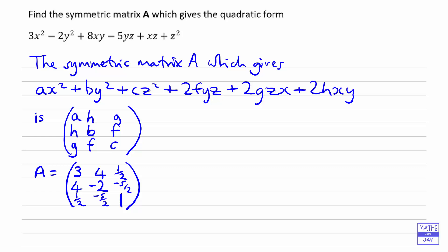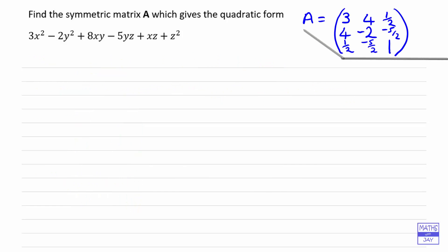So we have written down a symmetric matrix which gives that quadratic form. We'll check it, just in case you're unsure how it actually produces that form. So let's get rid of the general case to give ourselves more space. We've just left our matrix A, and we want to check that x^T A x gives 3x² minus 2y² and so on.